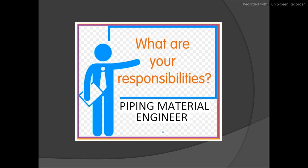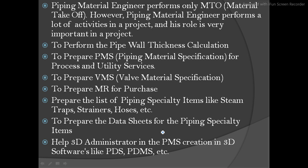What are the responsibilities of the piping engineer? The piping material engineer performs not only MTO — they perform a lot of activities in a project and their role is very important. They perform pipe wall thickness calculations depending upon the pressure and temperature, checking how much thickness is required. PMS is a piping material specification for process and utility service. For process, the material requirements are different from utility service because the process has higher temperature and pressure, while utility service handles water, air, and steam at lower conditions.